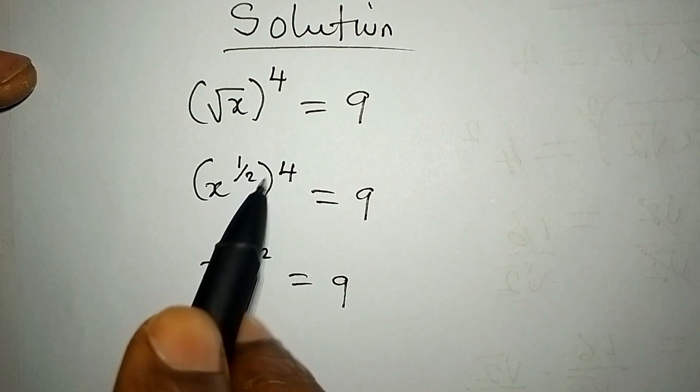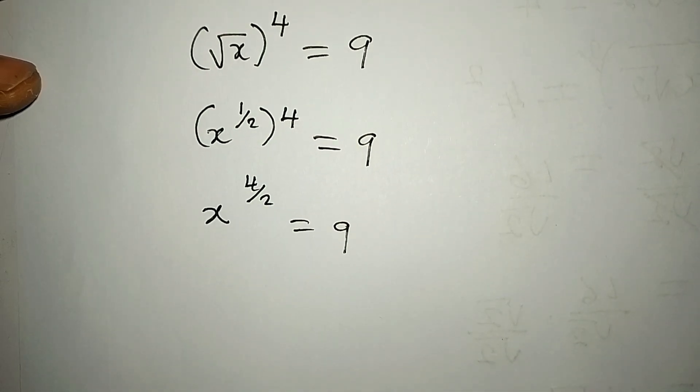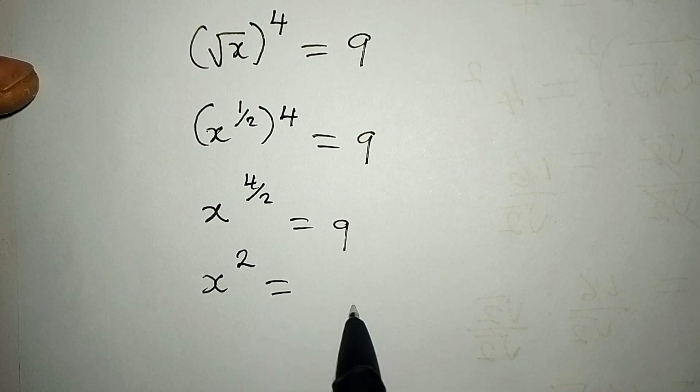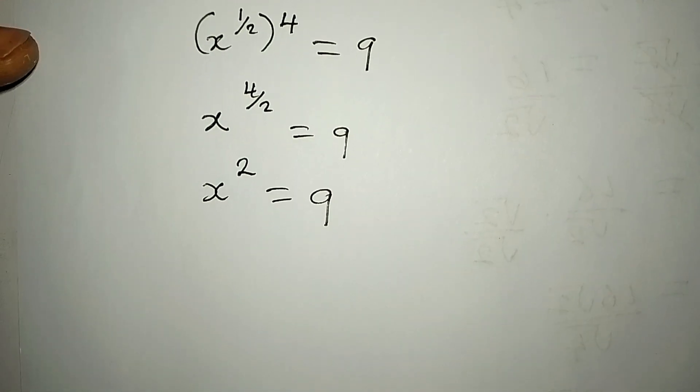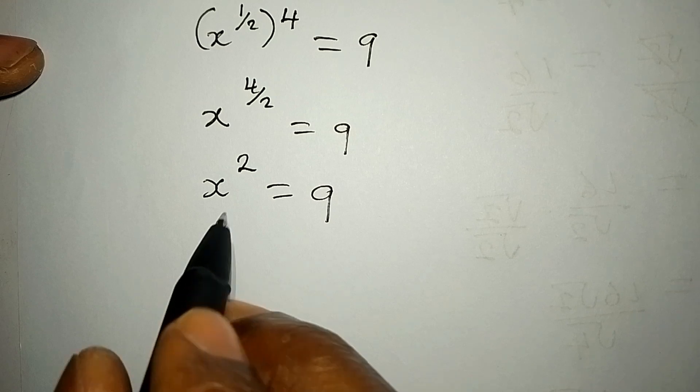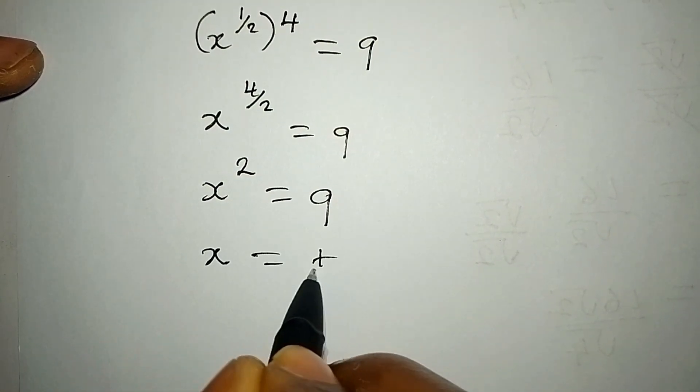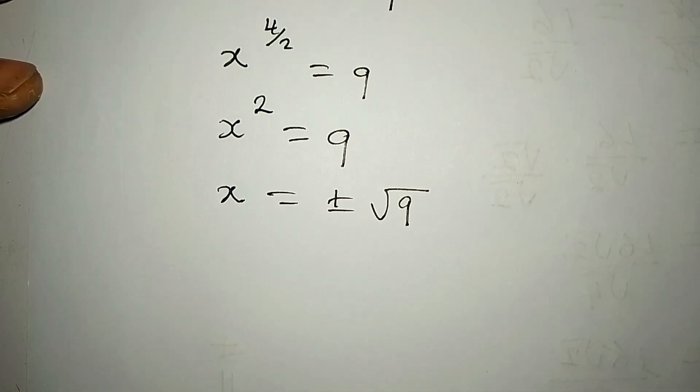Now from here we have x to the power of two which is equal to nine. Then to continue with this, we have x to be equal to plus or minus square root of nine, because we have to take the square root of both sides.